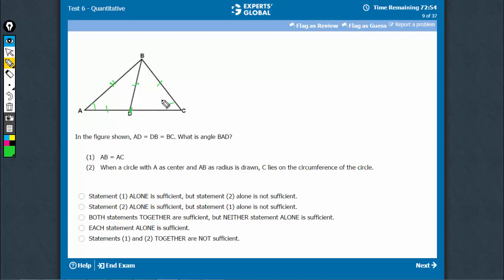As these two sides are equal, if this is angle C, this also becomes angle C. This becomes 180 minus 2C. If this is angle A, then as these two sides are equal, this also becomes angle A.